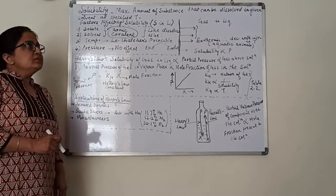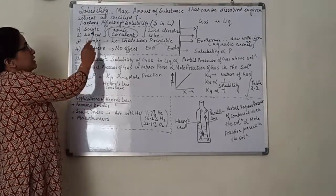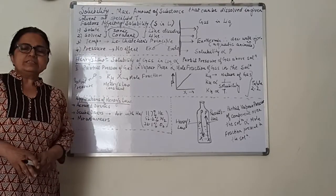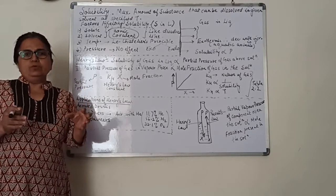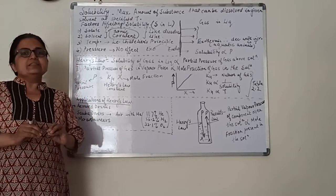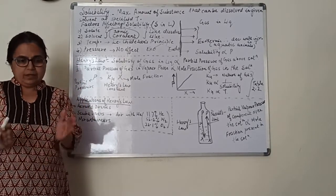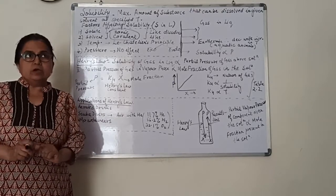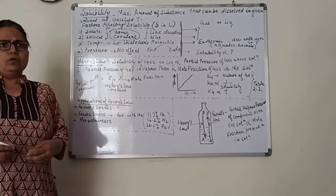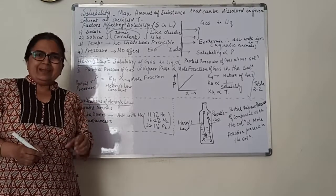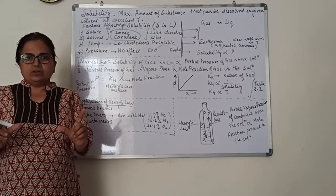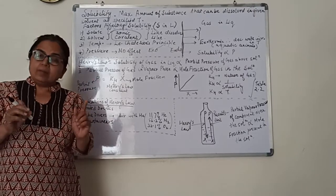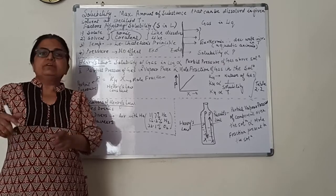Let us continue with solutions with the next topic: solubility. Solubility is defined as the maximum amount of a substance that we can dissolve in a given quantity of solvent at a specific temperature. For example, if I dissolve salt in 10 ml and 20 ml water, the amount dissolved will not be the same, and the amount will also vary with temperature.